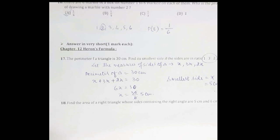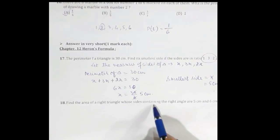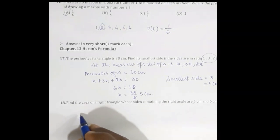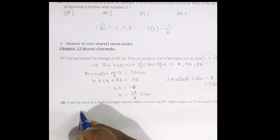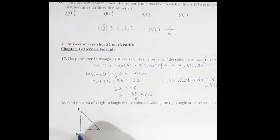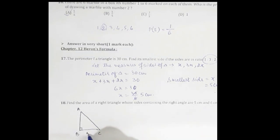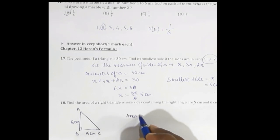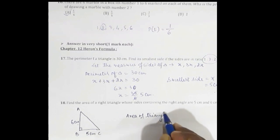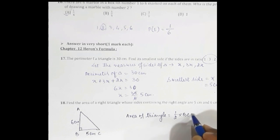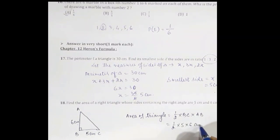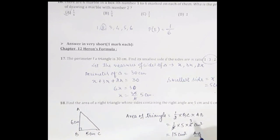Question 18: Find the area of a triangle whose sides containing the right angle are 5 cm and 6 cm. It is a right-angle triangle ABC with angle B = 90°. The sides BC and AB are 5 cm and 6 cm. Area of triangle = ½ × base BC × height AB = ½ × 5 × 6 = 15 cm². The answer is 15 cm².